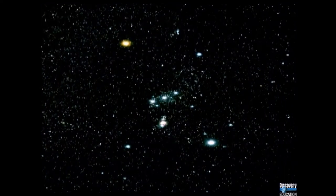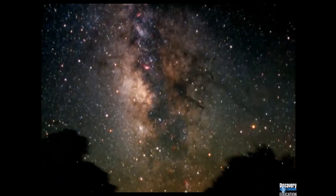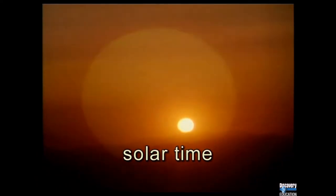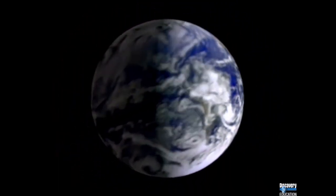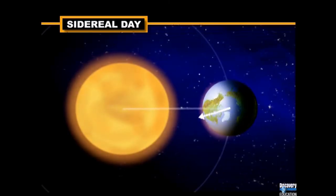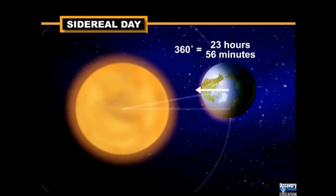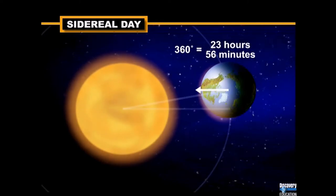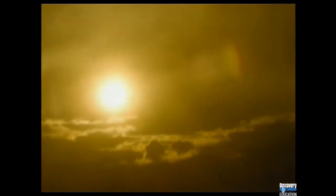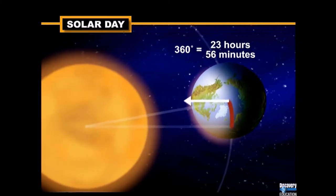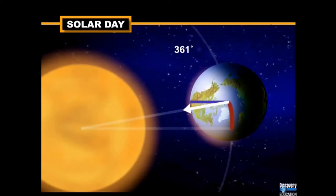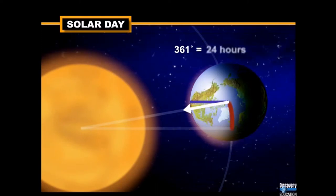Astronomers use sidereal time, counting on seeing the same star in the same spot every 23 hours and 56 minutes. Most people measure their days using solar time — the time it takes Earth to complete one rotation relative to the sun. There's actually a four-minute difference between the two, because Earth has not only rotated but also continued its orbit. To return to the same position opposite the sun, Earth turns about 361 degrees, adding about 4 minutes to give us the 24-hour solar day.